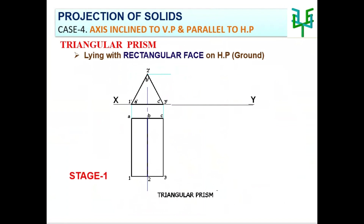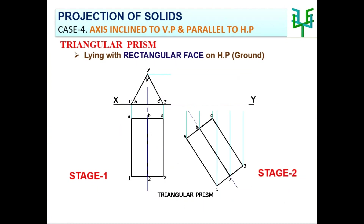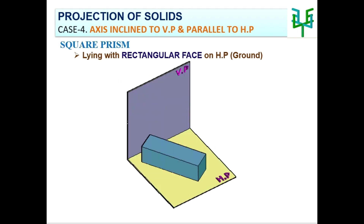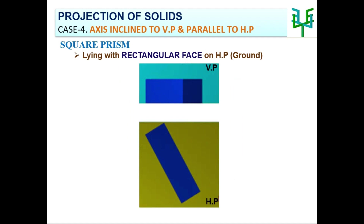For the second stage plan, the plan of the first stage should be tilted for the given inclination with respect to the XY line. Then by projecting from the plan of the second stage and elevation of the first stage, the final elevation can be drawn. The elevation of the initial position, i.e. the base shape of the solid, must be drawn by considering the sub-conditions of the solid with respect to the planes.